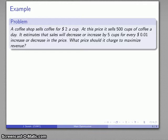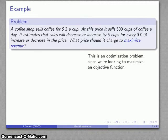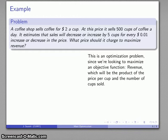Problems in the ideal world come with a question like find the maximum value of revenue, but in the real world we're not so accommodating. We have to infer that this is an optimization problem because the question is asking us for a price to charge to maximize revenue. So we're looking for the maximum value of some objective function, specifically revenue, which is the product of the price per cup and the number of cups sold.